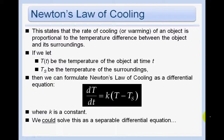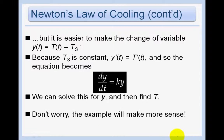Newton's Law of Cooling states that the rate of cooling or warming of an object is proportional to the temperature difference between the object and its surroundings. If T(t) is the temperature at time t and Tₛ is the temperature of the surroundings, then dT/dt = k(T − Tₛ). We could solve this as a separable differential equation, but it's easier to make a change of variable. Let y = T − Tₛ. Since Tₛ is a constant, y′ = T′, and the equation becomes dy/dt = ky, which we've seen before.